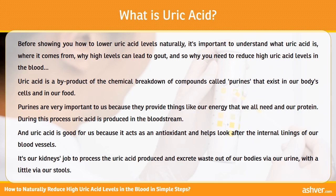Uric acid is a byproduct of the chemical breakdown of compounds called purines that exist in our body's cells and in our food. Purines are very important to us because they provide things like the energy we all need and our protein. During this process, uric acid is produced in the bloodstream, and uric acid is good for us because it acts as an antioxidant and helps look after the internal linings of our blood vessels.